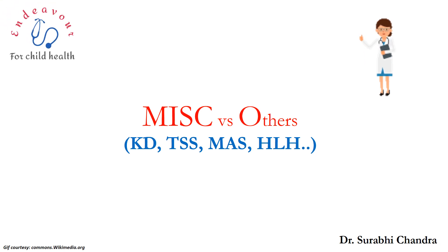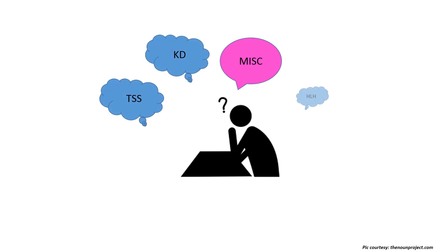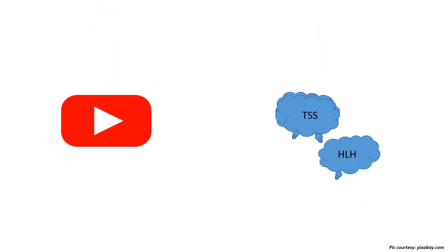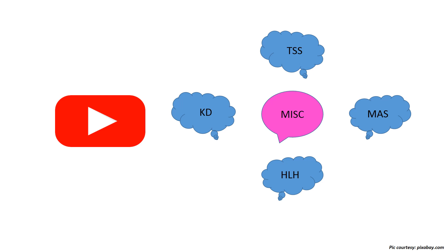Preliminary reports have started pouring in about a possible third wave of COVID from some areas in the country. Pediatric admissions have gone up, albeit due to other tropical infections like dengue, malaria, and scrub typhus. Are you confused between entities like multisystem inflammatory syndrome related to COVID, Kawasaki's disease, toxic shock syndrome, haemophagocytic lymphohistiocytosis, and macrophage activation syndrome? In this video, I shall discuss the similarities and dissimilarities between these entities which we are likely to confuse.